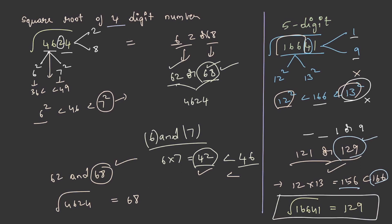You might have a doubt, what if the achieved number is greater than the given number? Then you have to take the lesser value among the two. This is how you find out the square root of 5-digit number and 4-digit number respectively. Hope you all understood the concept.